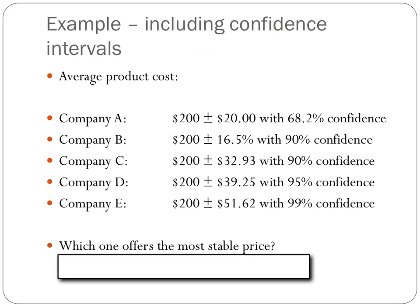Therefore, to have all the information we need in a statistical sense to compare pricing and uncertainty, we need to include a confidence interval. The confidence interval tells us the percentage of time for which the stated uncertainty is going to be true. In this example, company A offers the product at $200 plus or minus $20, but that plus or minus $20 is valid only about 70% of the time. Company E, on the other hand, is stating their price variability with 99% confidence, meaning 99% of the time the product cost will be somewhere between $150 and $250. So again, which company offers the most stable pricing?